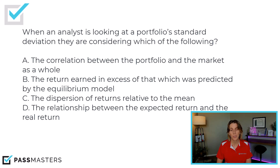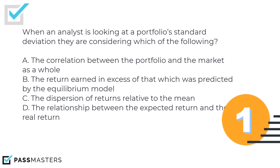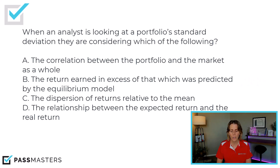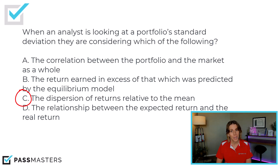Let's practice some questions related to standard deviation. When an analyst is looking at a portfolio standard deviation, they are considering which of the following: the correlation between the portfolio and the market as a whole — that sounds like beta; the return earned in excess of that which was predicted by the equilibrium model — that's describing alpha; the dispersion of returns relative to the mean; or the relationship between the expected return and the real return. The correct answer is C — the dispersion of returns relative to the mean. Mean means average.